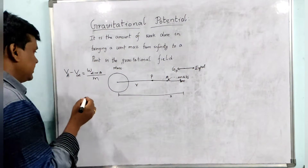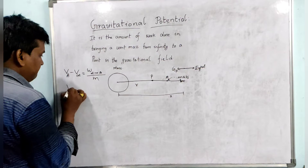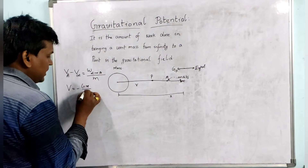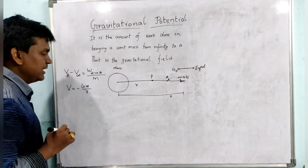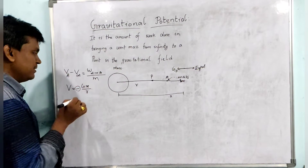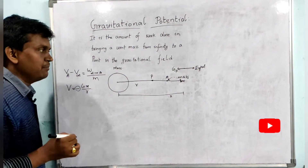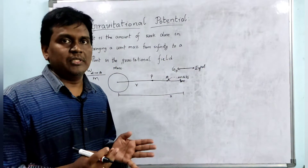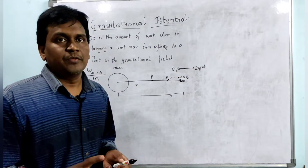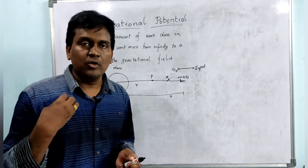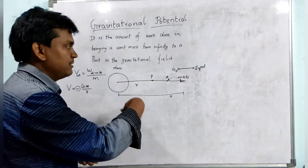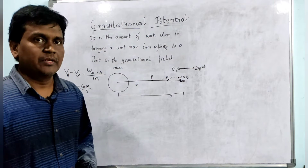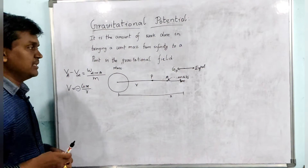That is why we see a negative sign: gravitational potential V equals minus GM by R. The minus sign is there because the work done by the external force is negative. Whenever we do work in the gravitational field, the work will be negative.